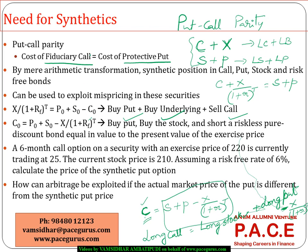Similarly, if I want the put option, I can create it as P equals C plus X divided by (1+R)^T minus S. I can synthetically create a put option by going long on the call, buying a bond, and shorting a stock. This position will synthetically create a put option. We can create four synthetic positions: synthetic call, synthetic bond, synthetic stock, and synthetic put.